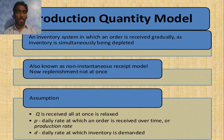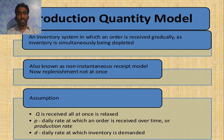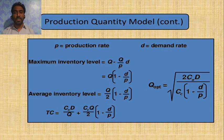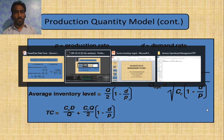The Production Quantity Model is an inventory system in which the order is received gradually as inventory is being depleted, also known as the non-instantaneous receipt model, where items are not replaced all at once. The assumption that Q is received all at once is relaxed. P stands for the daily rate at which an order is received over time, or the production rate; D denotes the daily rate at which inventory is demanded. The formula defines how the production model quantity works, where P is the production rate, the maximum inventory level is denoted as Q, and D represents the demand rate over the production time period.